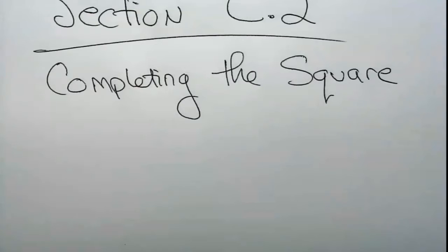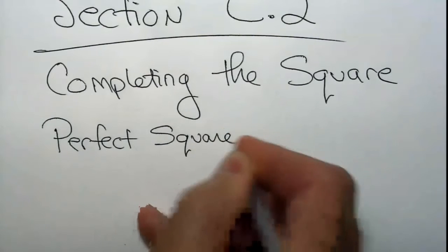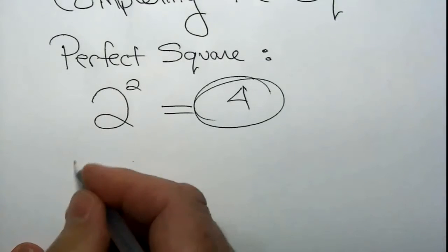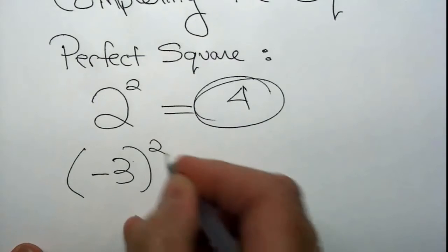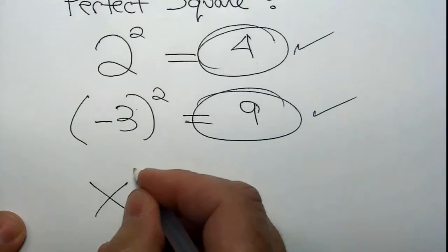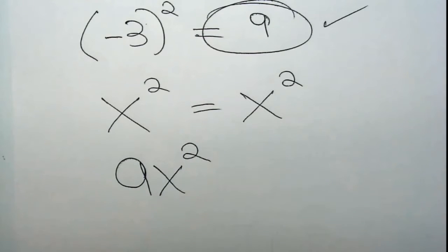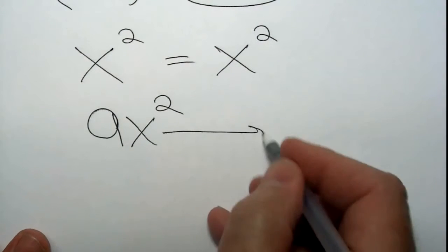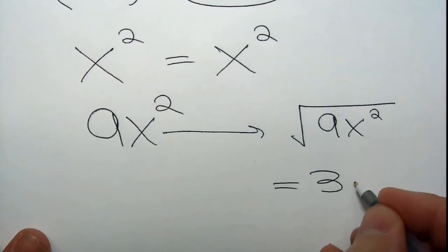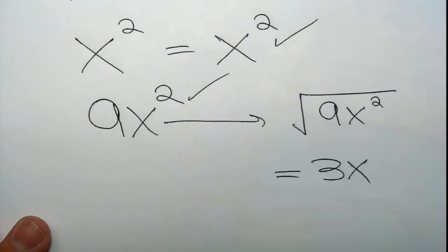So I'm going to start with the notion of what is a perfect square. A perfect square is the result of squaring something. These are all perfect squares. And you will know that it's a perfect square by taking its square root — when you do, you ought to end up with a nice, clean algebraic result. You shouldn't have a square root in your answer.